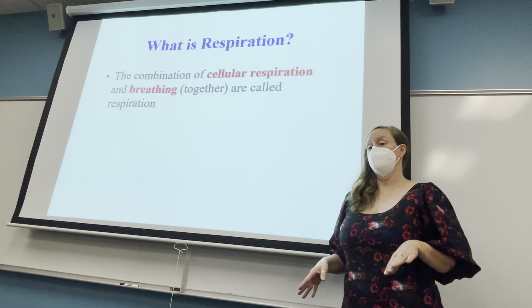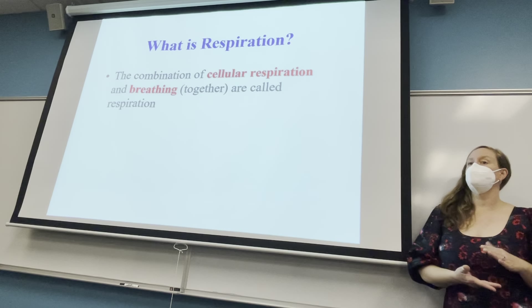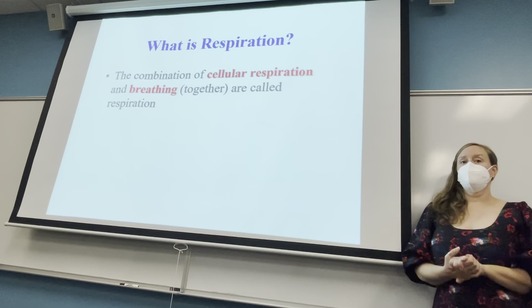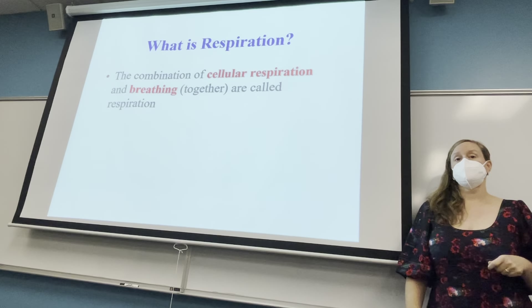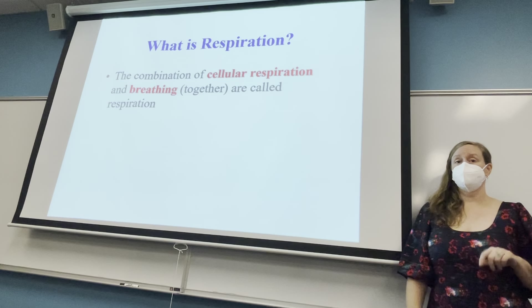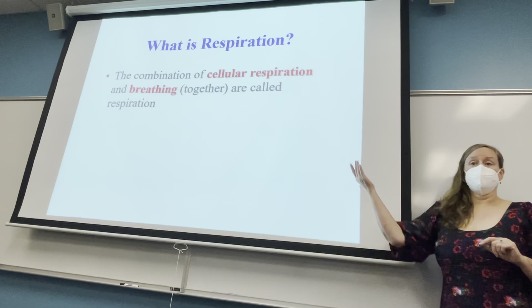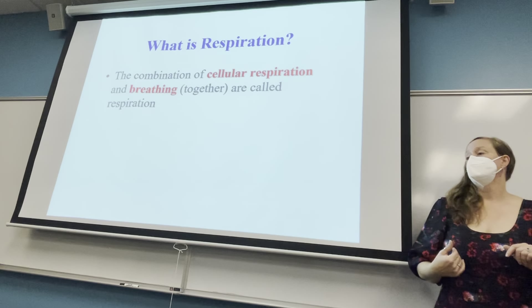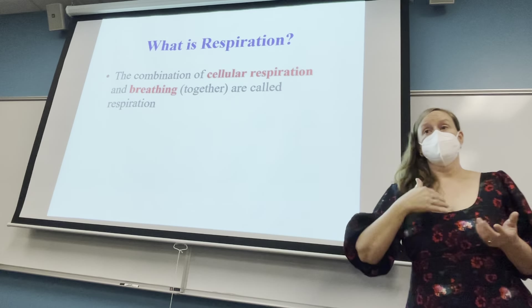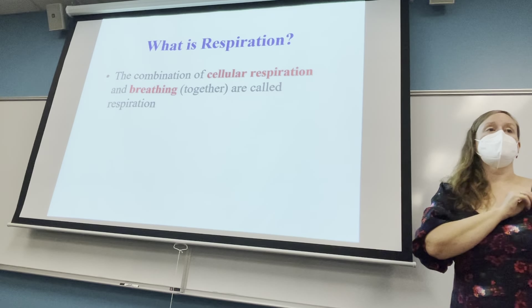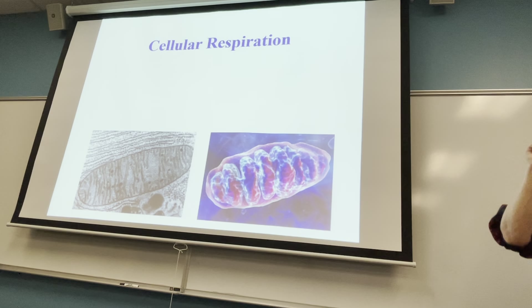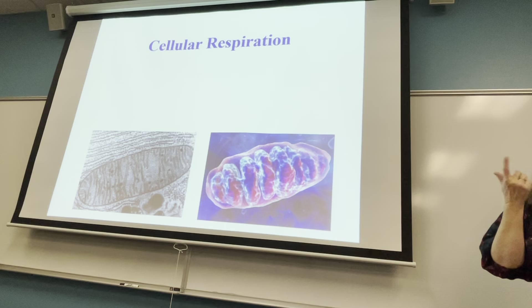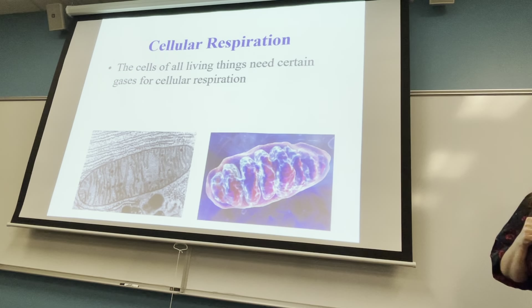Cellular respiration — if you took Bio 111 you went into some detail about it — essentially means that you are using oxygen to help more efficiently break down your food sources at the cellular level. Breathing is the whole process of the lungs extracting oxygen, diffusing it into the blood, and carbon dioxide diffusing out. We talked about this when we went over evolution and the more efficient process of breaking down food with oxygen.